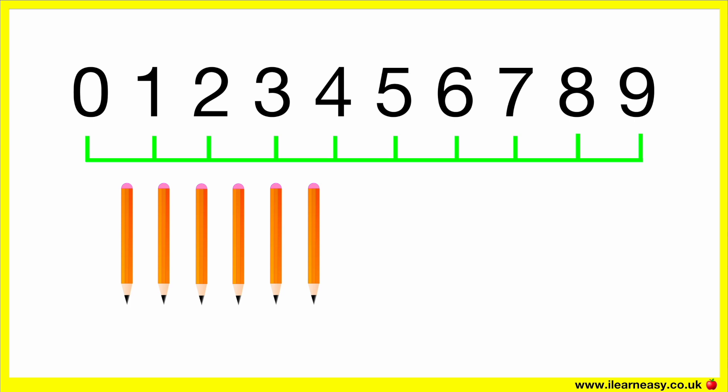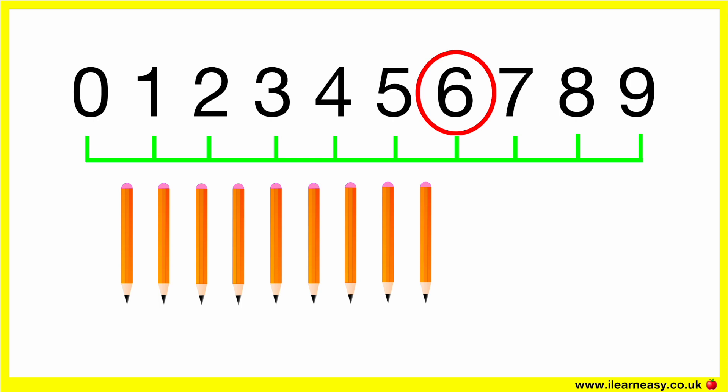How many pencils are there? Let's count the number of pencils: 1, 2, 3, 4, 5, 6. There are 6 pencils. If we want to add 3 more pencils, then how many pencils will there be? We just need to count on 3 more to get to 9: 6, 7, 8, 9.